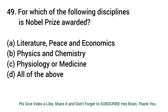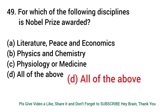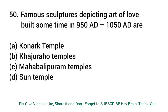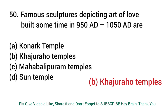For which of the following disciplines is the Nobel Prize awarded? Answer: All of the above — Literature, Peace, Economics, Physics, Chemistry, Physiology, Medicine. Famous sculptures depicting Art of Love, built sometime between 950 A.D. to 1050 A.D., are? Answer: Khajuraho Temples.